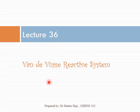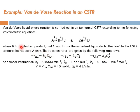It's lecture 36, and we're going to discuss together Van de Vusse's reactive system. Van de Vusse's liquid phase reaction is carried out in an isothermal CSTR according to the following stoichiometric equations: A goes to B, B goes to C, so we have reactions in series, and 2A goes to D. You can see that you have here parallel reactions.